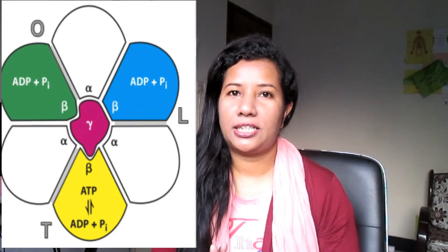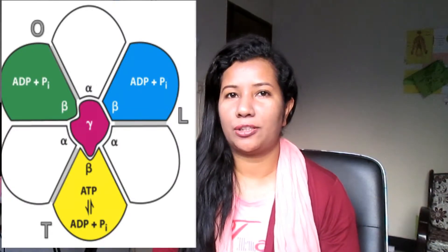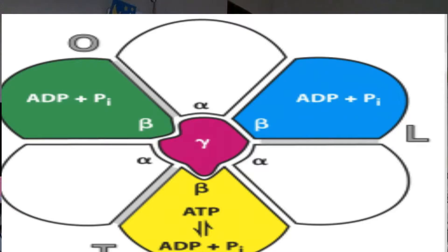ATP synthase has three binding sites and a part of the molecule that rotates as hydrogen ions pass through. This produces structural changes in the binding sites, allowing them to pass through three phases: binding ADP and inorganic phosphate, forming tightly bound ATP, and then releasing ATP.